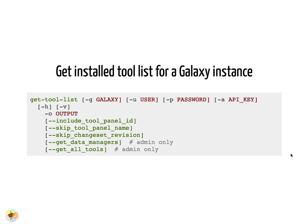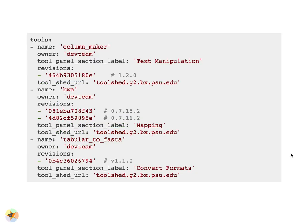One of the Ephemeris commands is get_tool_list, which can be used to get a list of installed tools for any public Galaxy instance — for example, Galaxy Europe. An API key isn't required to run this, but some options are not available unless an admin API key is provided. Any Galaxy user can have an API key, obtainable from user preferences. The output is a YAML list of tools such as ColumnMaker, BWA, and TabularToFasta, each with a name, owner, and section label. You could use a file like this to install the same tools on another Galaxy instance.